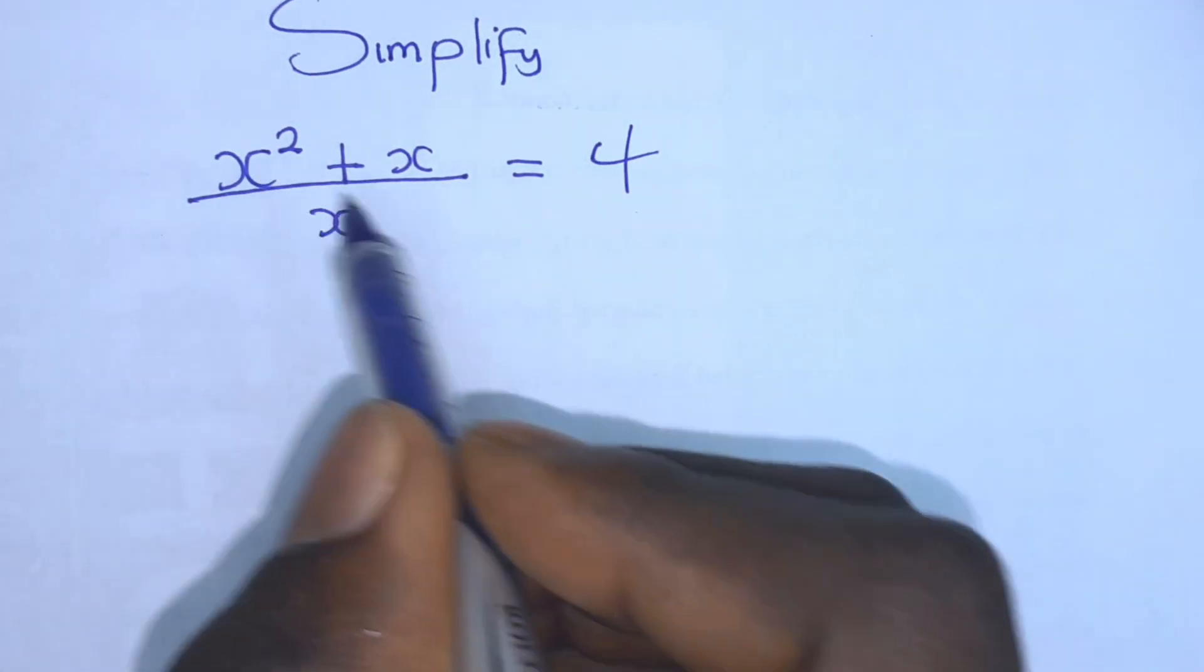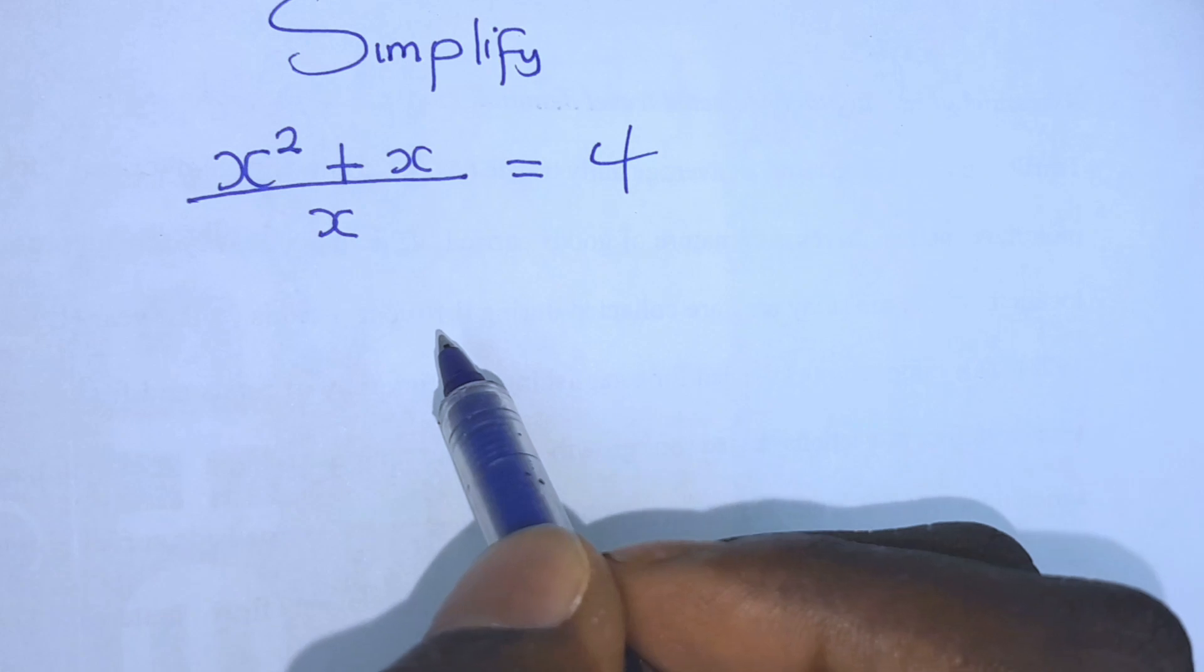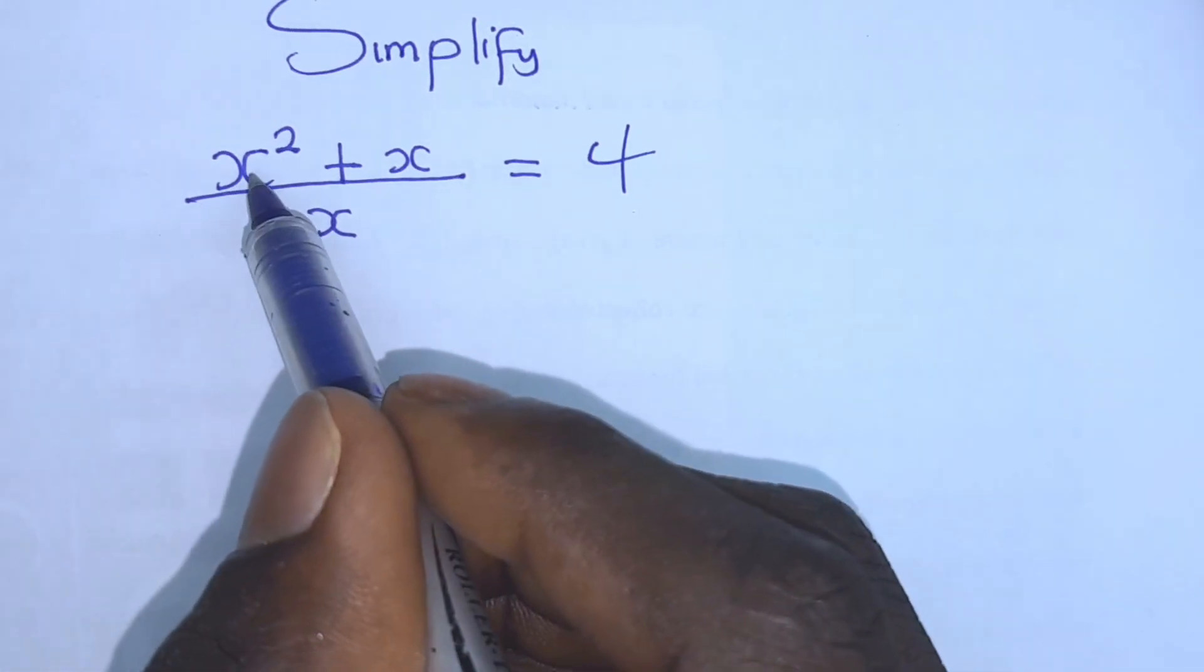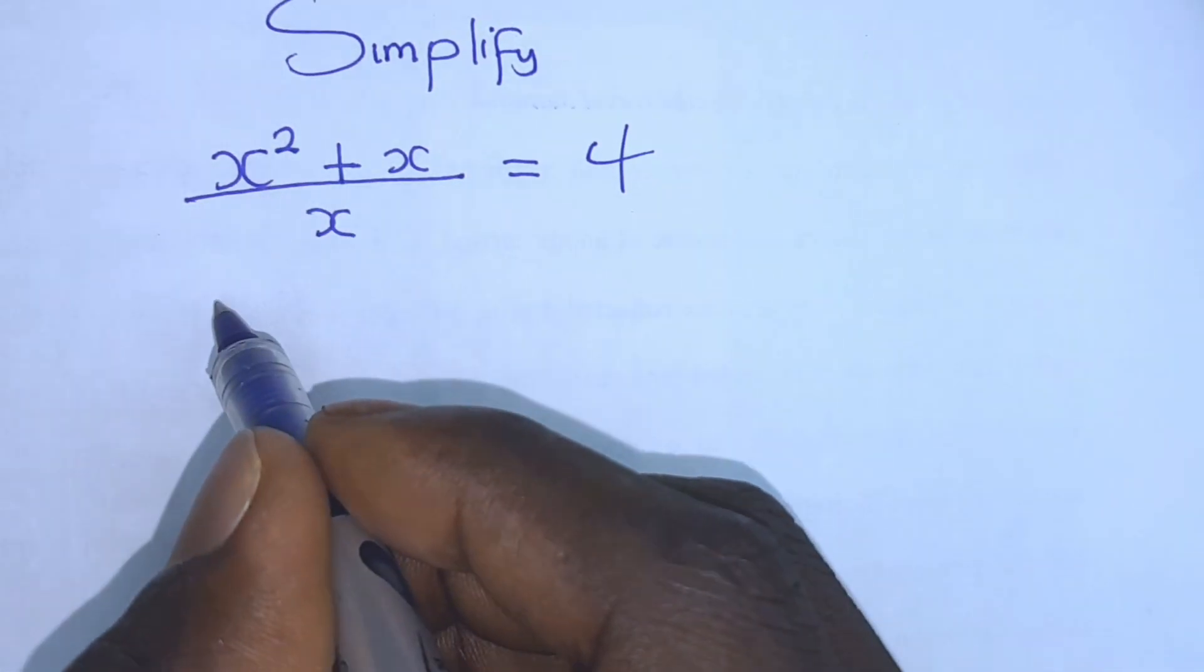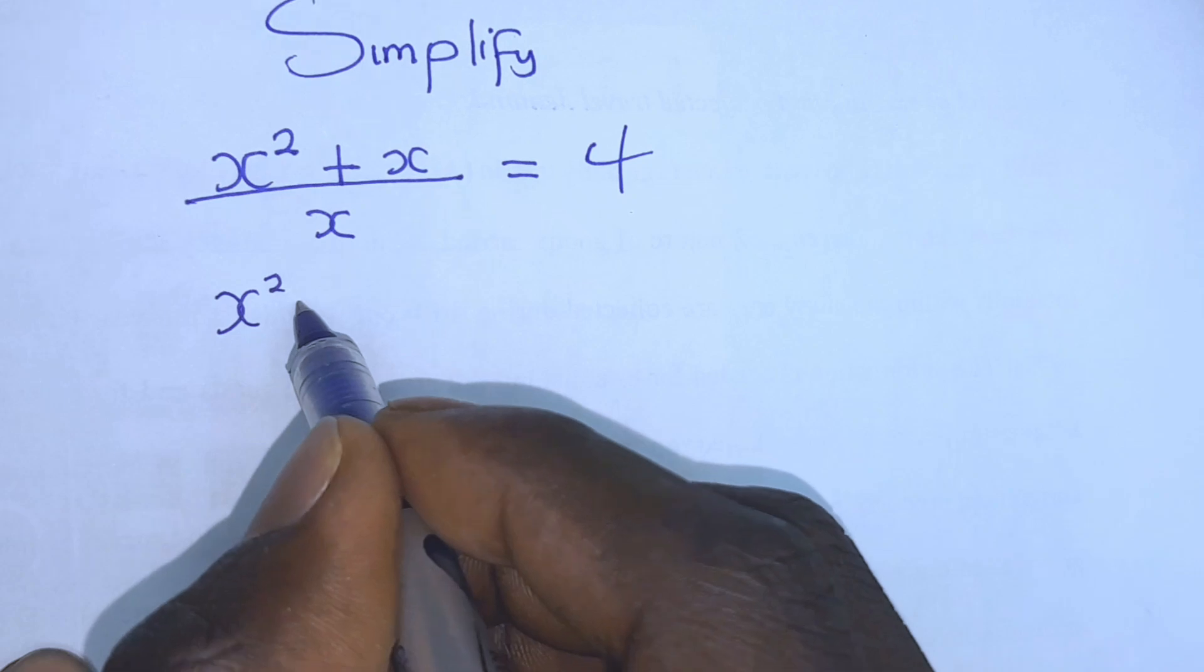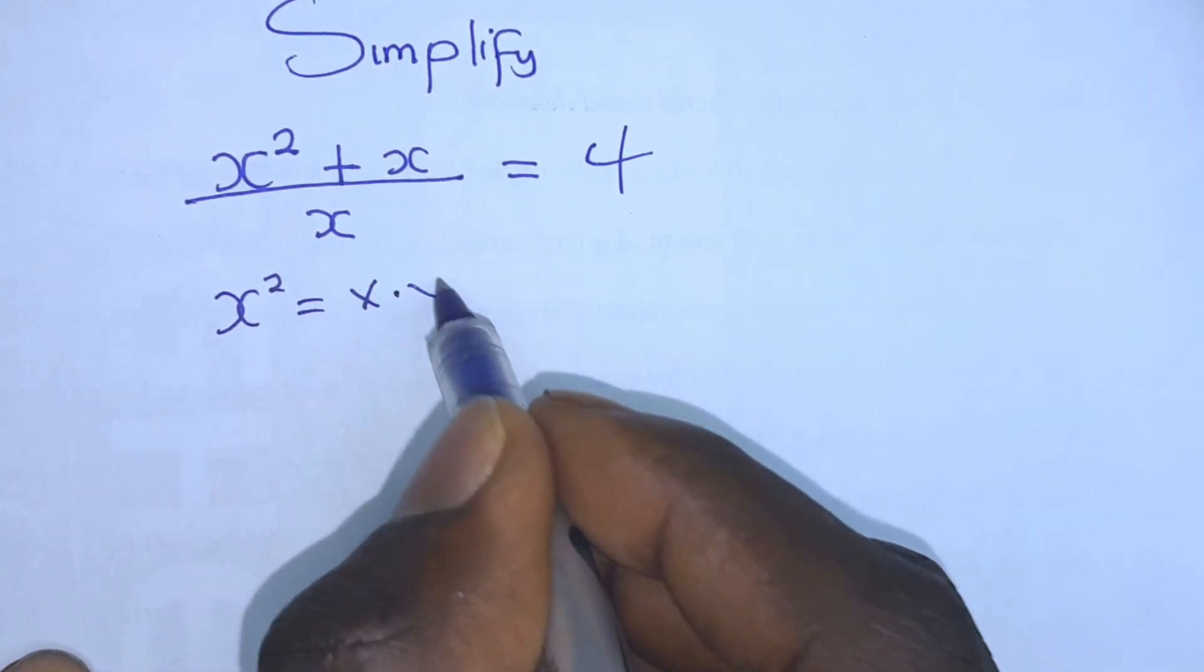We have x squared plus x over x is equal to 4. So, we know that x squared is the same thing as x times x, right?